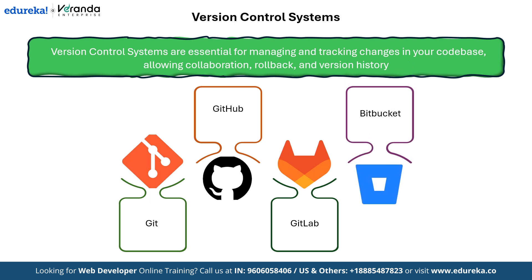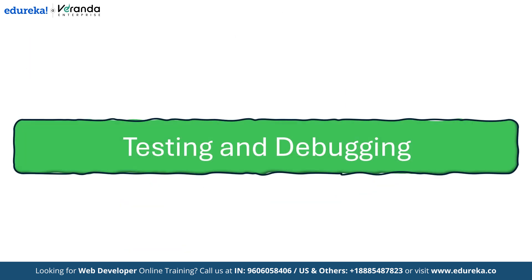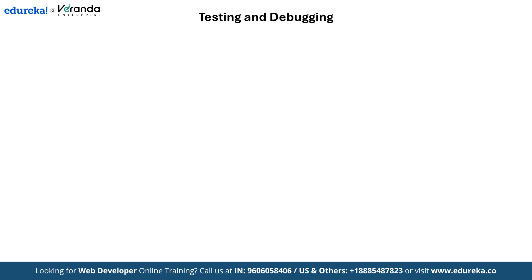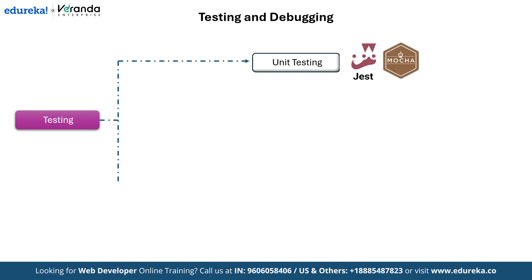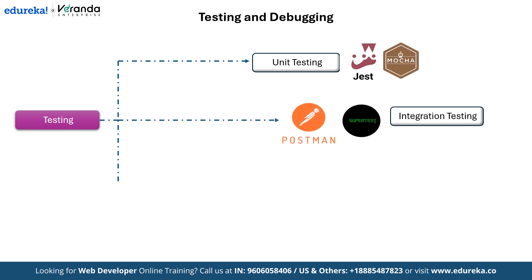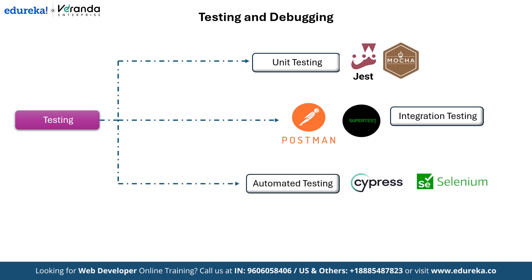The next important step is testing and debugging. Testing is essentially a quality check confirming that your application functions properly. There are several levels of testing. Unit testing focuses on testing individual components of your code to ensure they work correctly — popular tools include Jest and Mocha. Integration testing checks how different parts of your application work together; platforms like Postman are great for testing APIs. Automated testing uses scripts to automatically run tests on your application, saving time and reducing human effort — Cypress and Selenium are commonly used for this purpose.